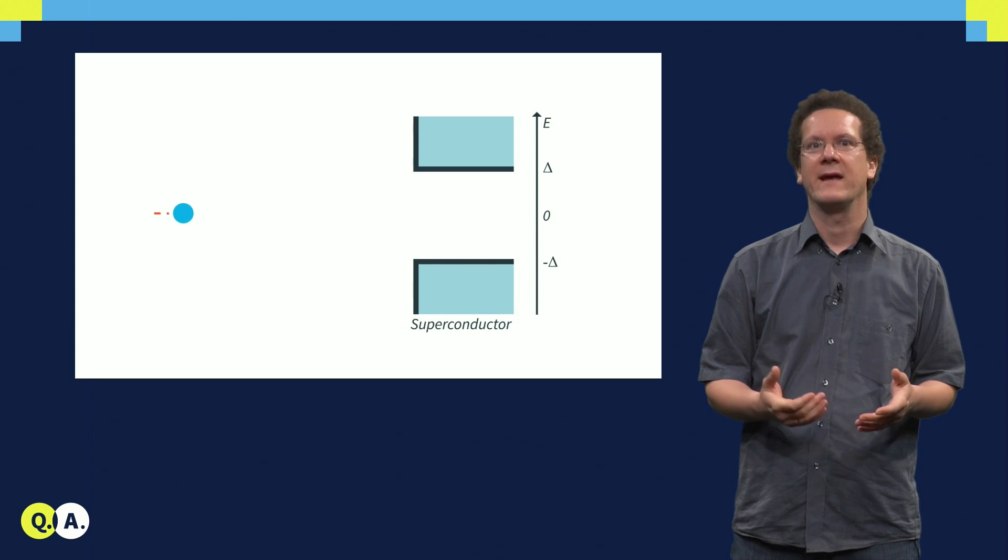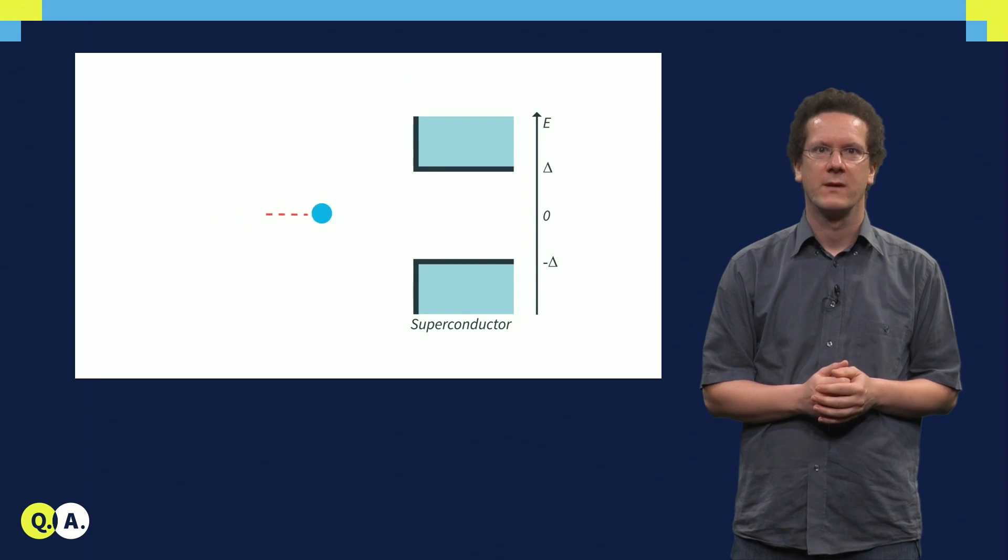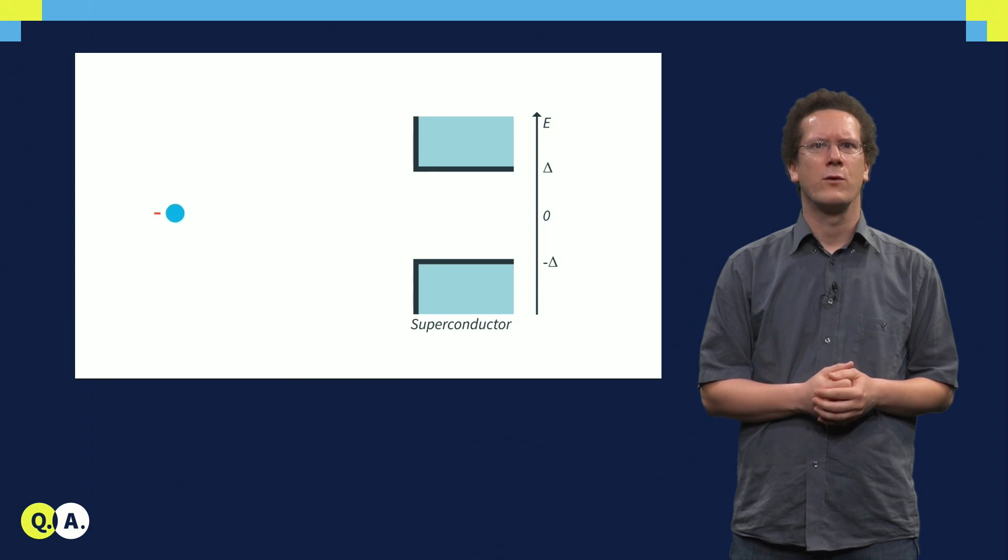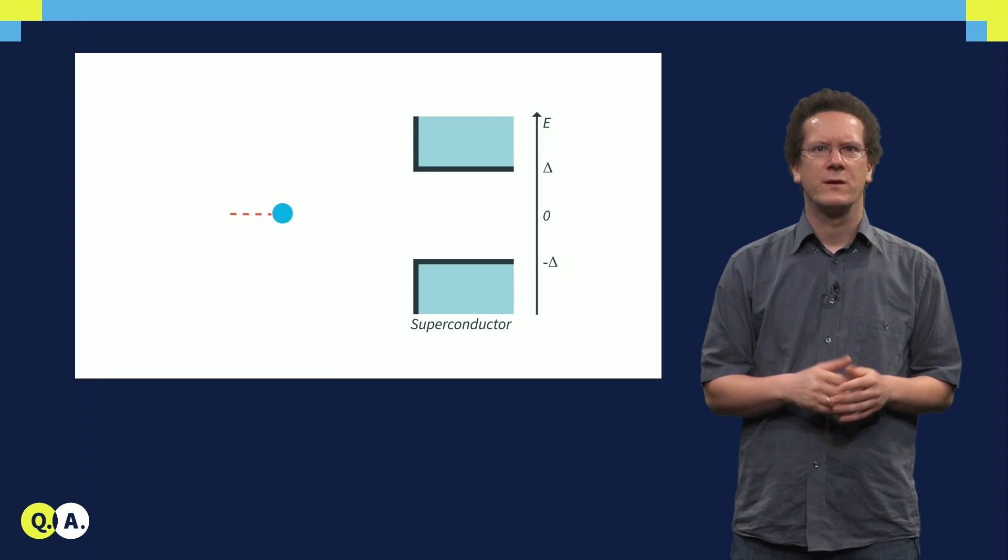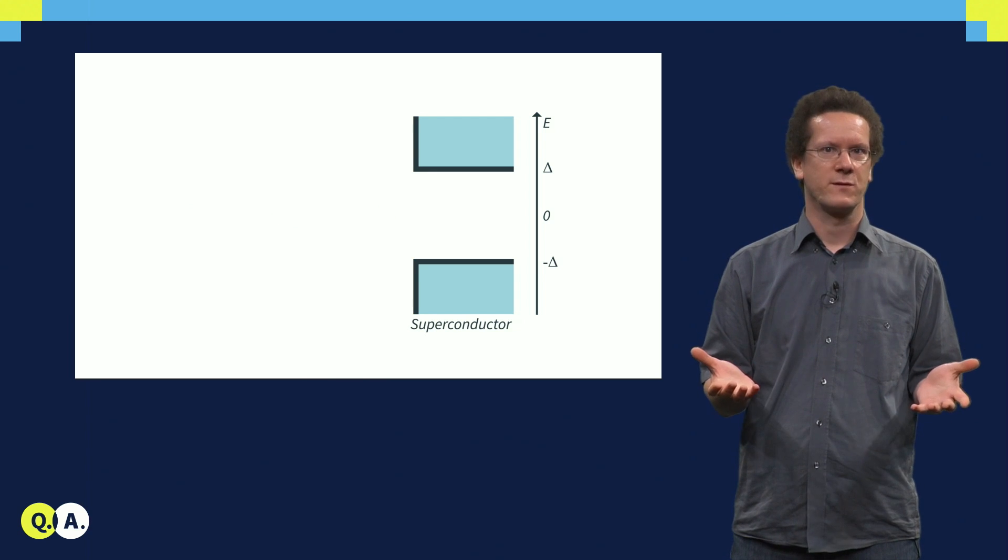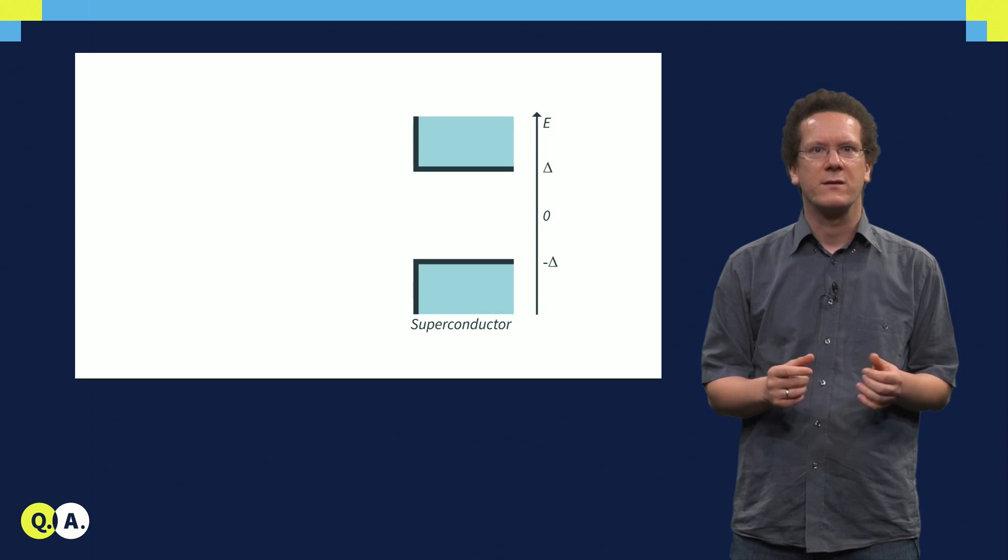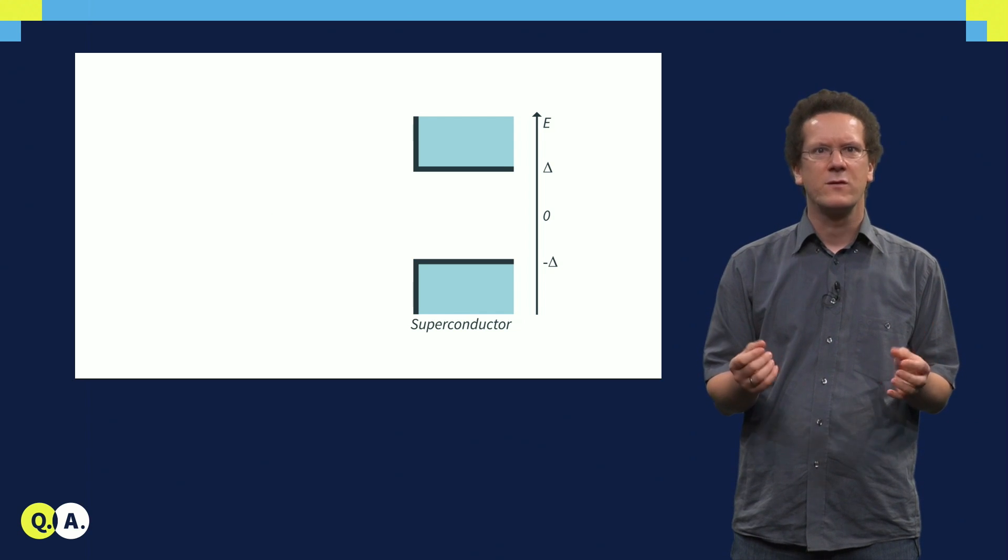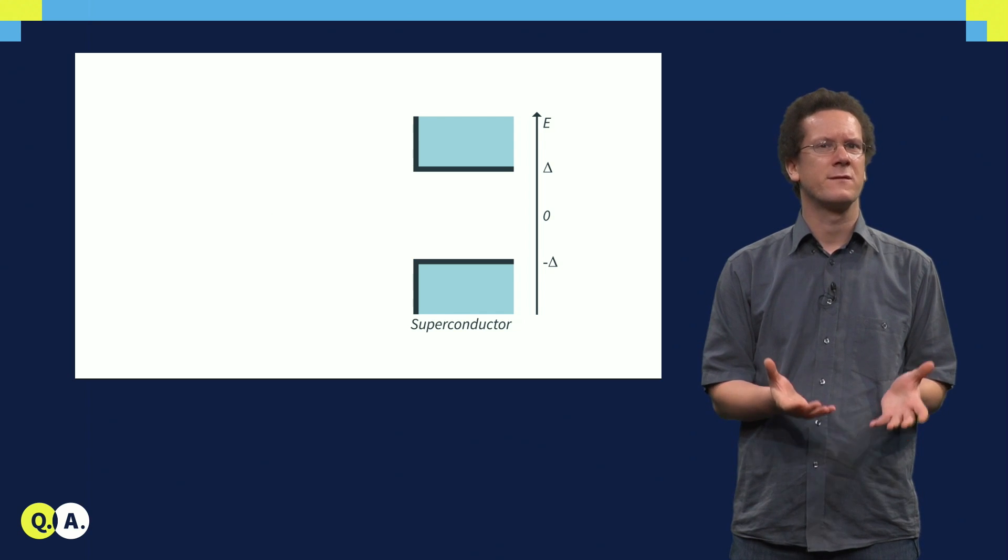Let us first consider the case of a normal superconductor and forget about Majoranas for a while. We are interested in current flowing from the normal metal to the superconductor. Current in a normal metal is carried by electrons. However, when an electron comes to the superconductor, something funny happens. The superconductor has a quasi-particle gap, which doesn't allow single electrons in the system.